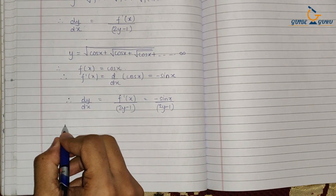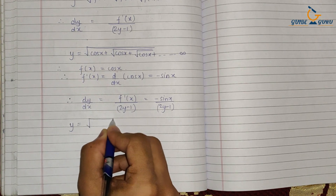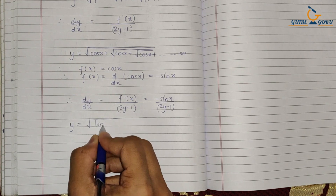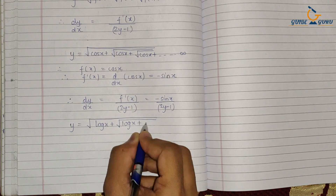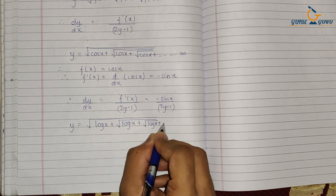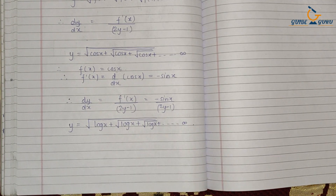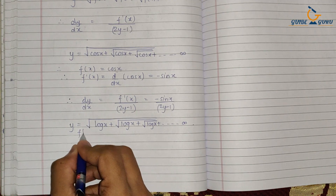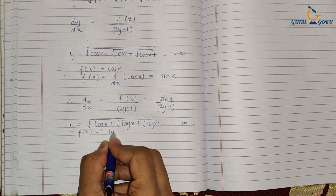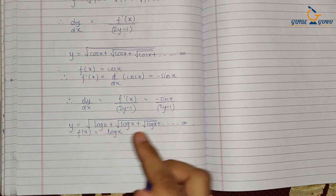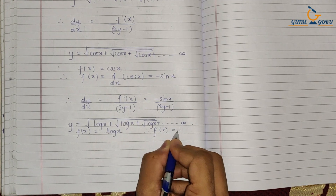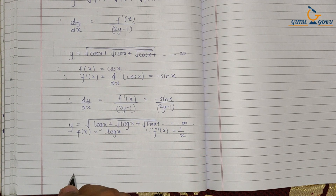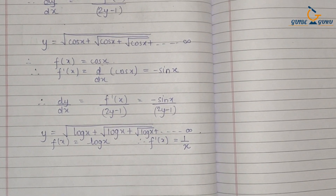Let us consider one more example. Consider y equal to square root of log(x) plus square root of log(x) plus square root of log(x), going on till infinity. Here the function is log(x), and f'(x) — the derivative of log(x) — is 1 upon x.